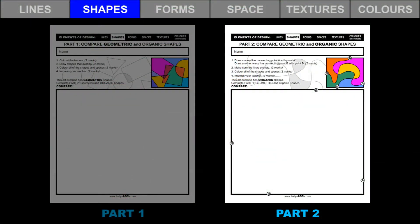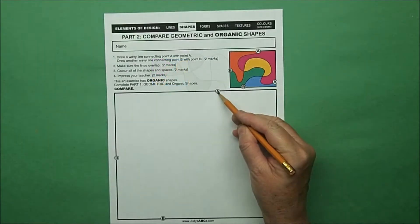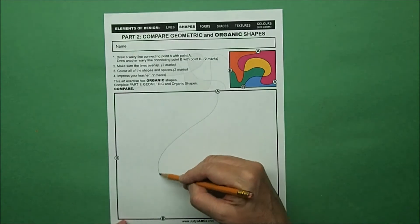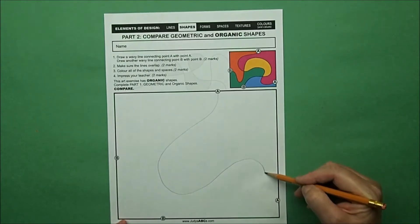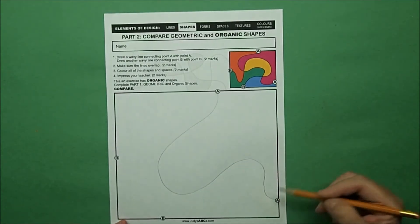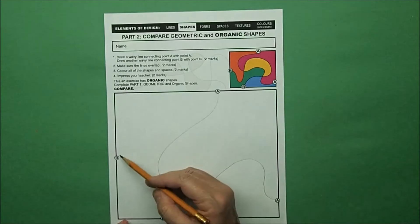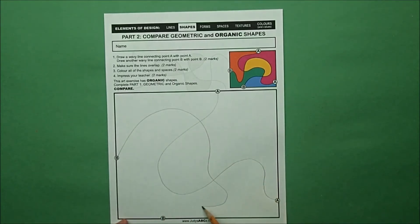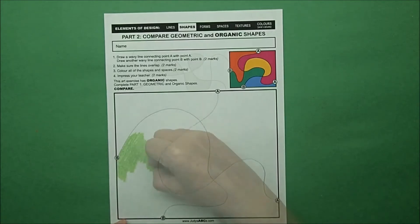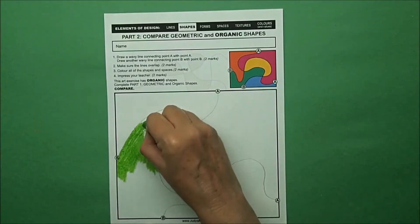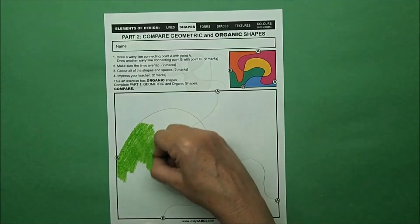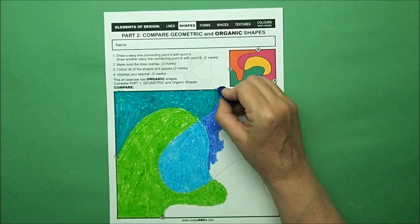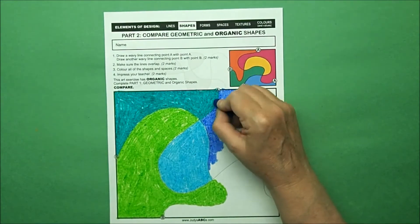Next, complete the art exercise part two with organic shapes. Draw a wavy line connecting point A with point A. Draw another wavy line connecting point B with point B. Make sure the lines overlap. Just like before, color all of the shapes and spaces and add an outline.